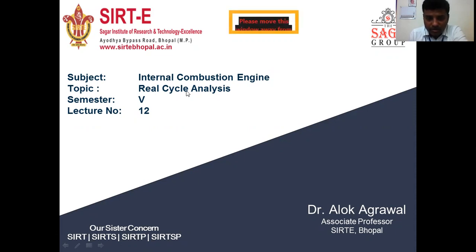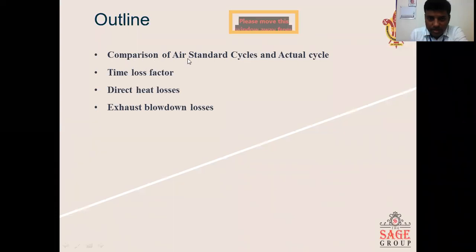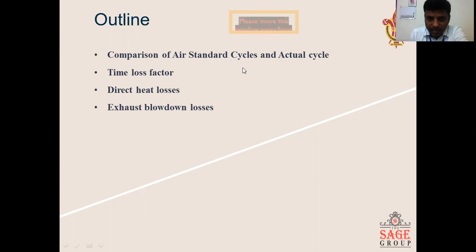In the last class we have seen various air standard cycles — that is the Carnot cycle, Otto cycle, Diesel cycle, and Dual cycle. In this class we will study the real cycle, and we will see the comparison of the air standard cycle and actual cycle. This actual cycle is also called the real cycle. So what are the main factors by which the air standard cycle differs from the real cycle?